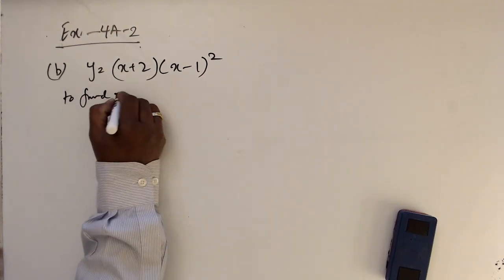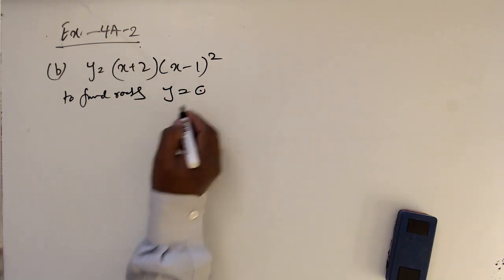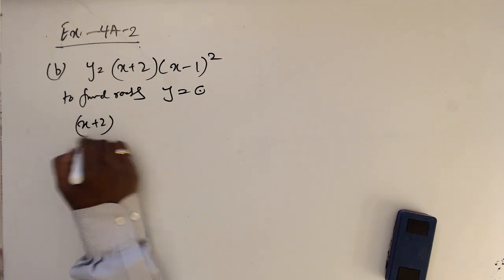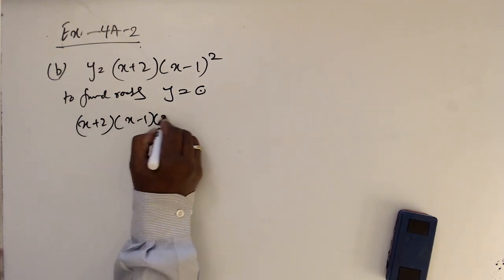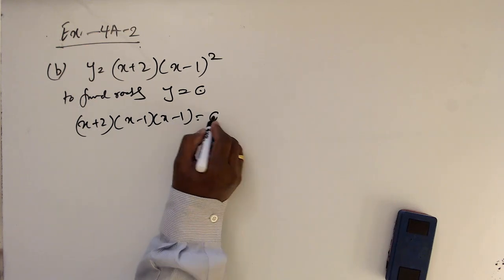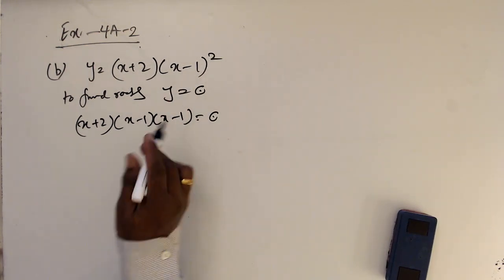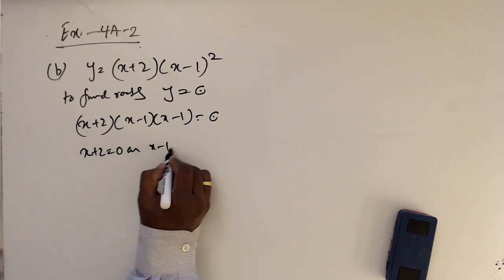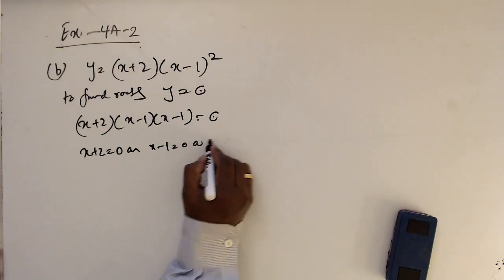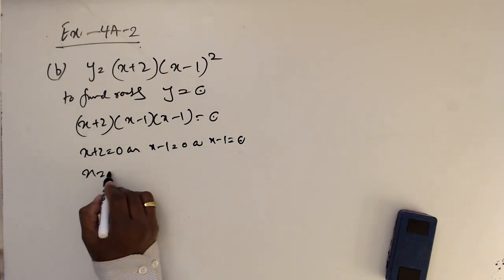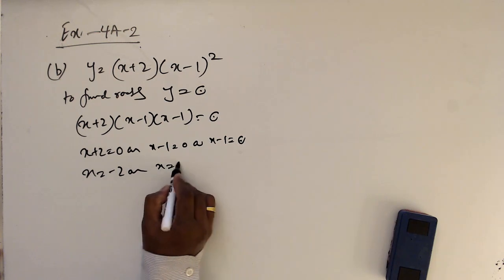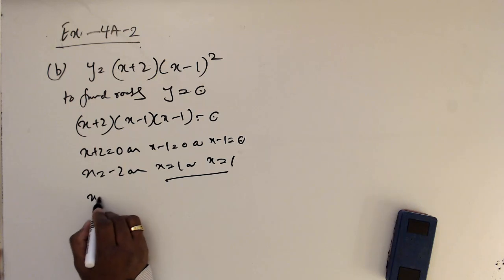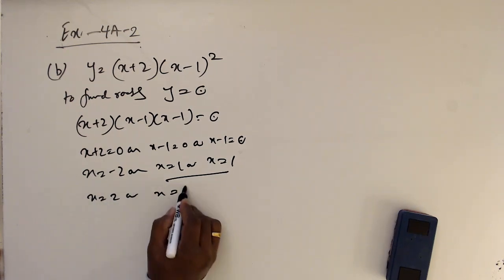This is part B. To find roots, make y equal to 0: (x+2)(x-1)(x-1) equals 0. I wrote (x-1) two times. So x+2 equals 0, x-1 equals 0, or x-1 equals 0, giving x equals minus 2 or x equals 1. We have two repeated roots: x equals minus 2 and x equals 1.